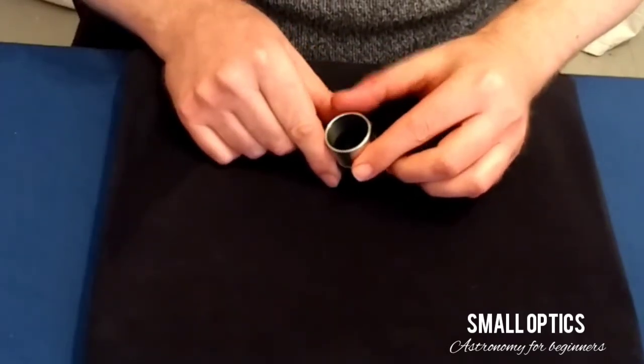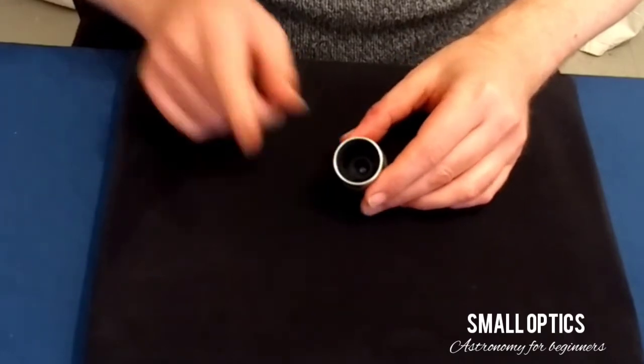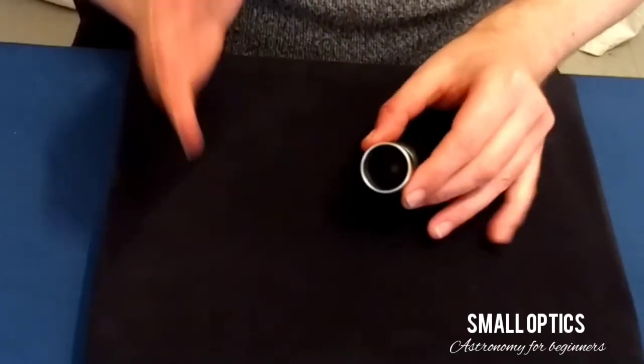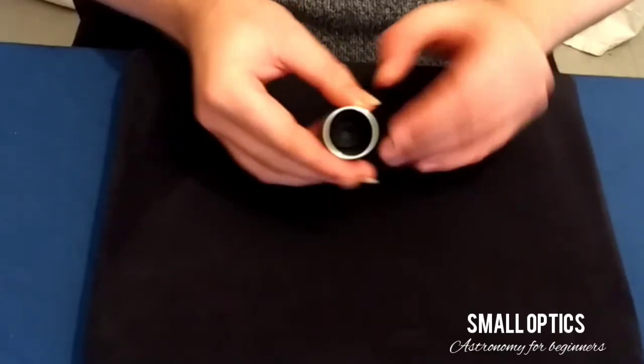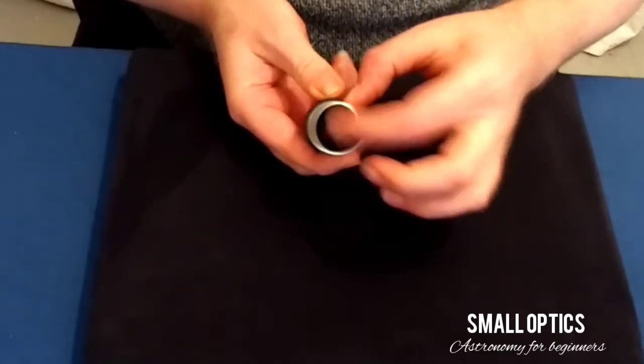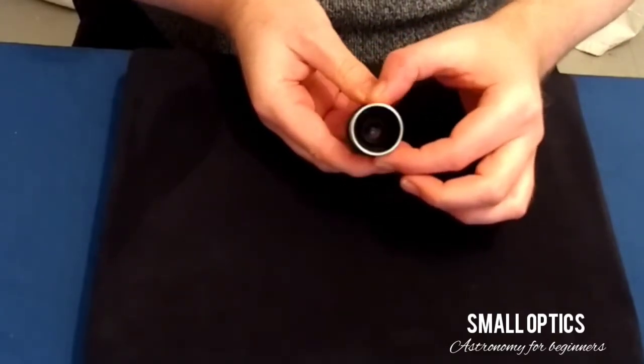One thing I do like, say these are a budget eyepiece, is they are blackened on the inside, which is nice really for a budget eyepiece. And they're all threaded to accept filters and such like.